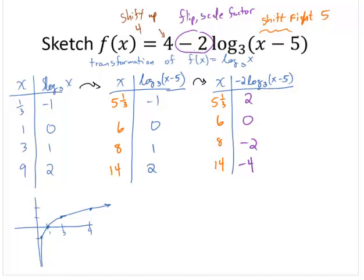All right, so now we have x and our final f(x) taking care of the shift. I still have the 5 and 1/3, 6, 8, and 14 as my inputs. But now my outputs, I'm going to shift up 4.